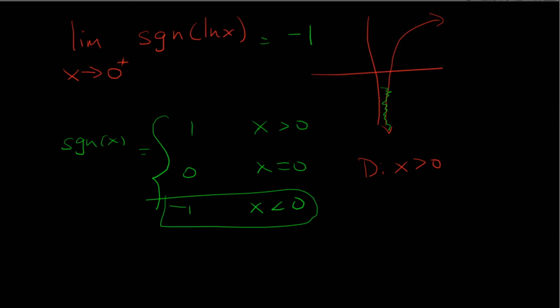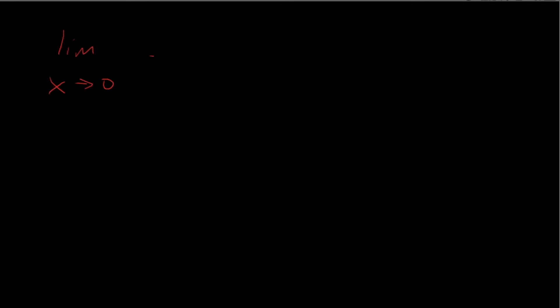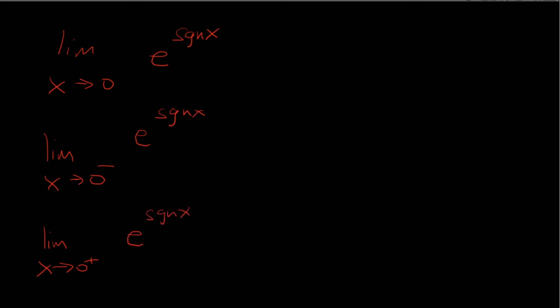We did ln of x. Now let's do e to the x — the limit as x approaches 0 of e to the sign of x. We want to approach it from the left and the right. Sign of x from the left is going to be negative, so this will be negative 1. And from the right, it's positive, so I'm going to say positive 1. Because the left-hand and the right-hand limits do not agree, we say that the limit does not exist.